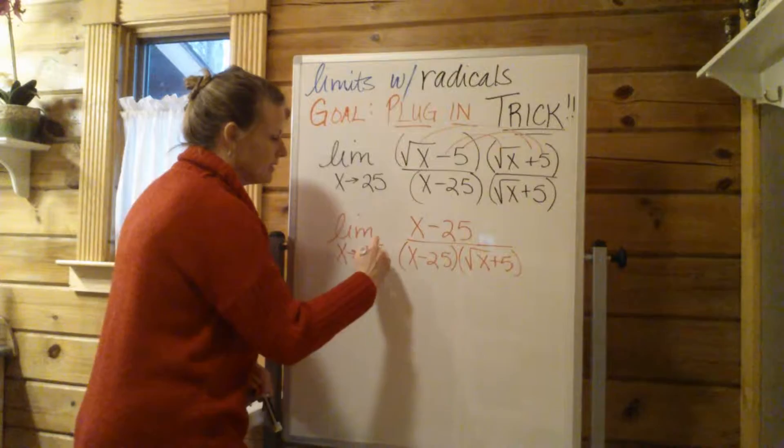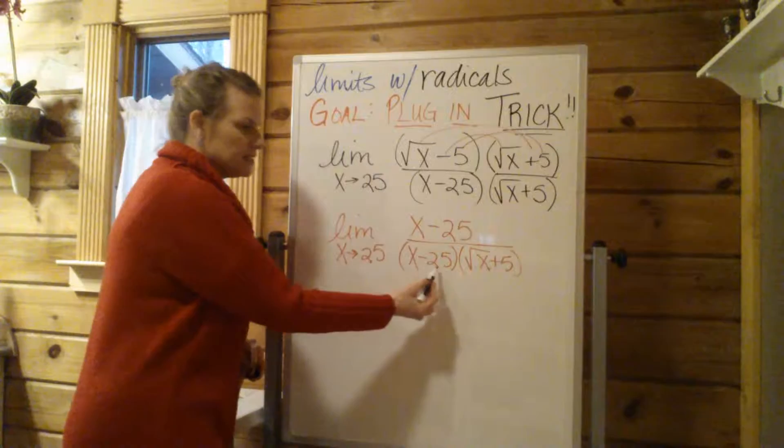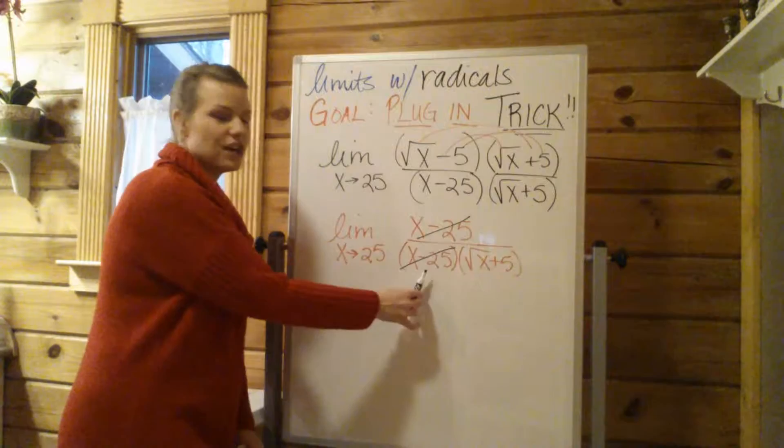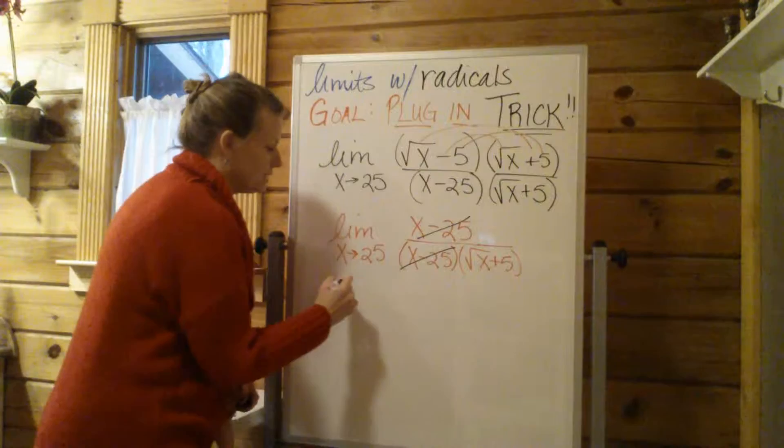This is still a limit. I have not plugged the x value in yet, so I still have to write the limit. Now what happens? Lo and behold, when you multiply by the conjugate or rationalize, the x minus 25s on top and bottom are going to cancel. That's why I wanted you to keep that factor intact. Don't foil it out. Because the x minus 25s are always just going to cancel.